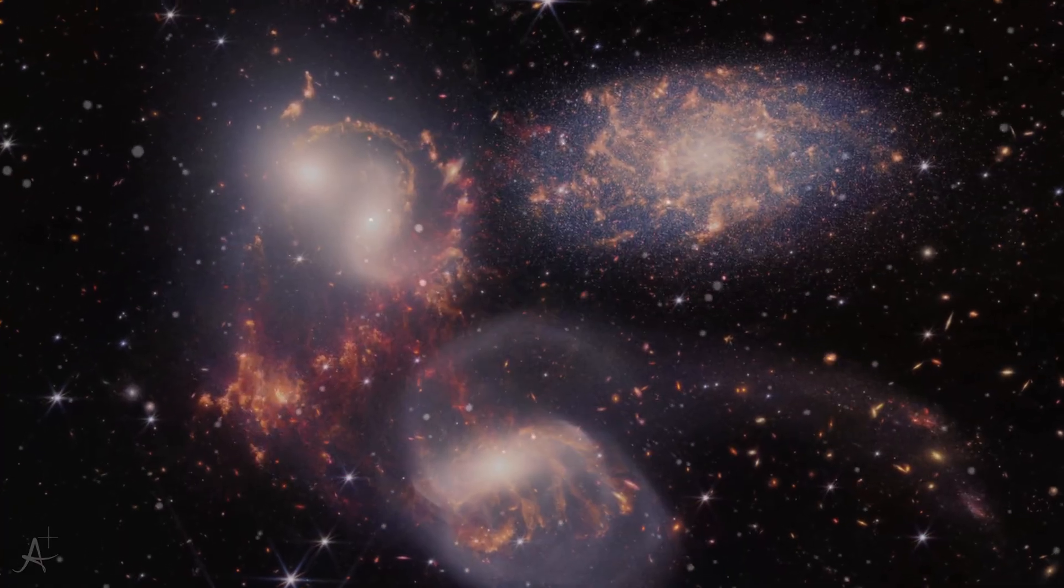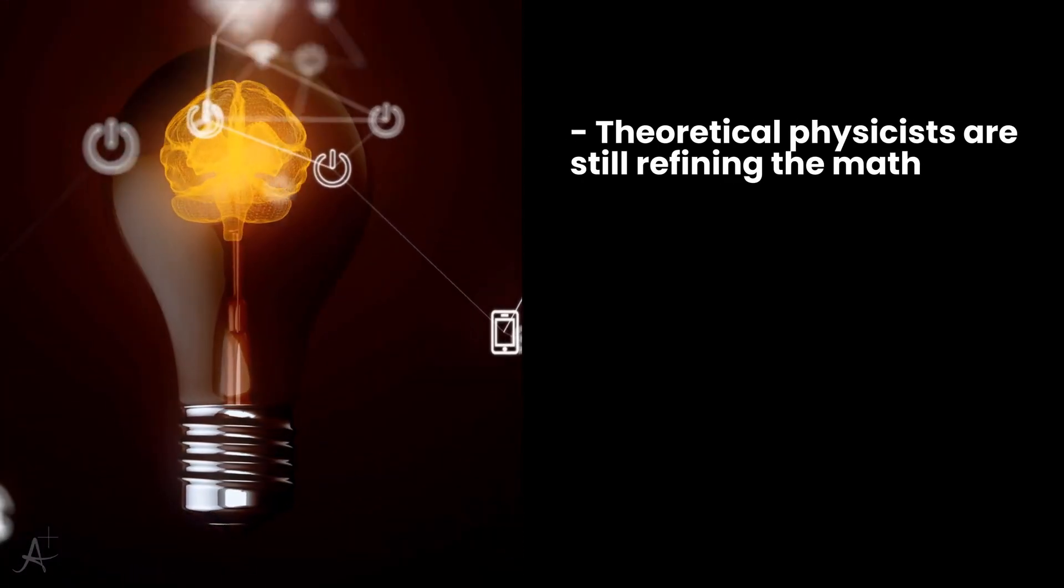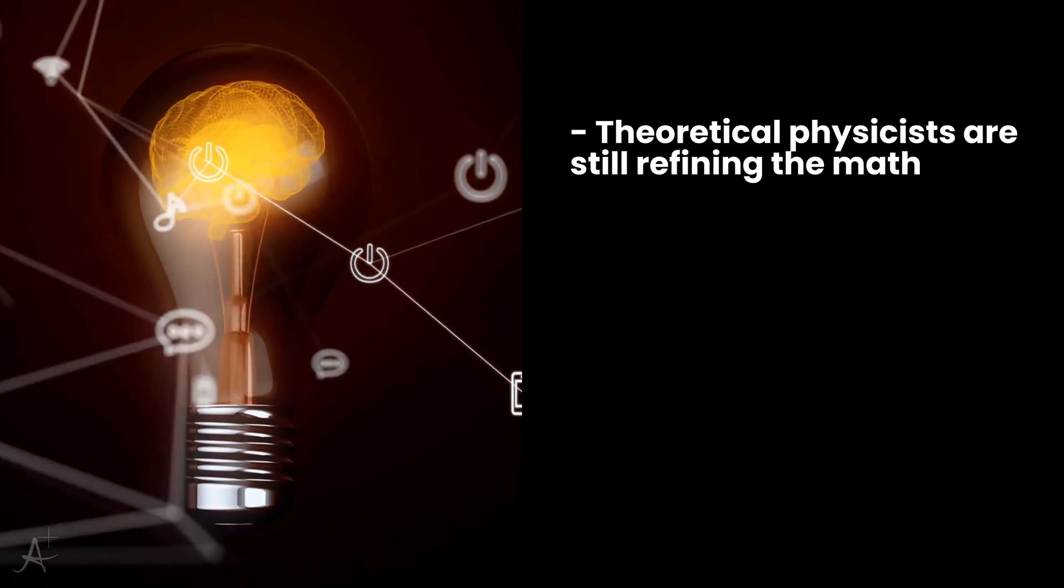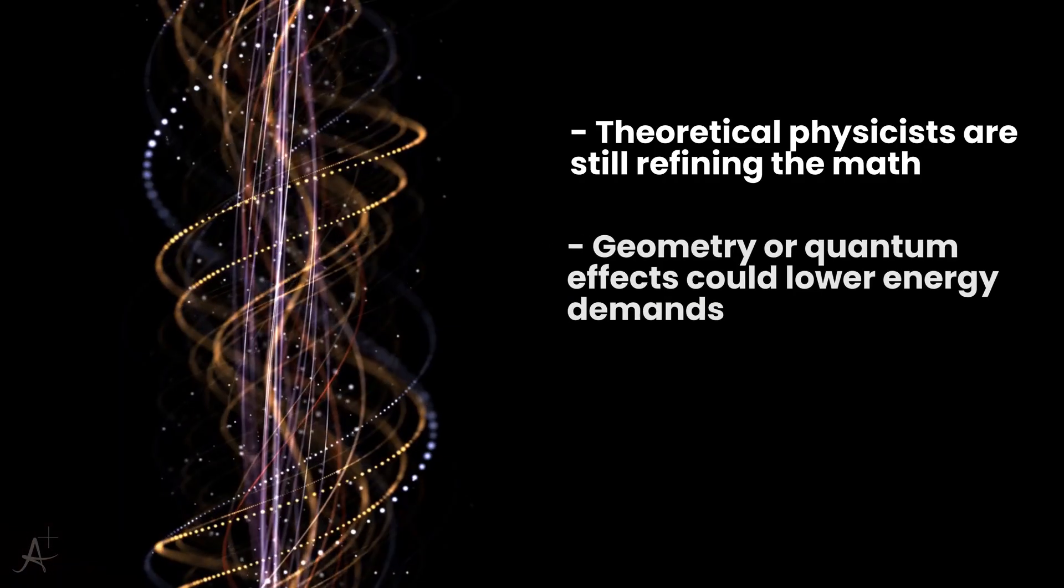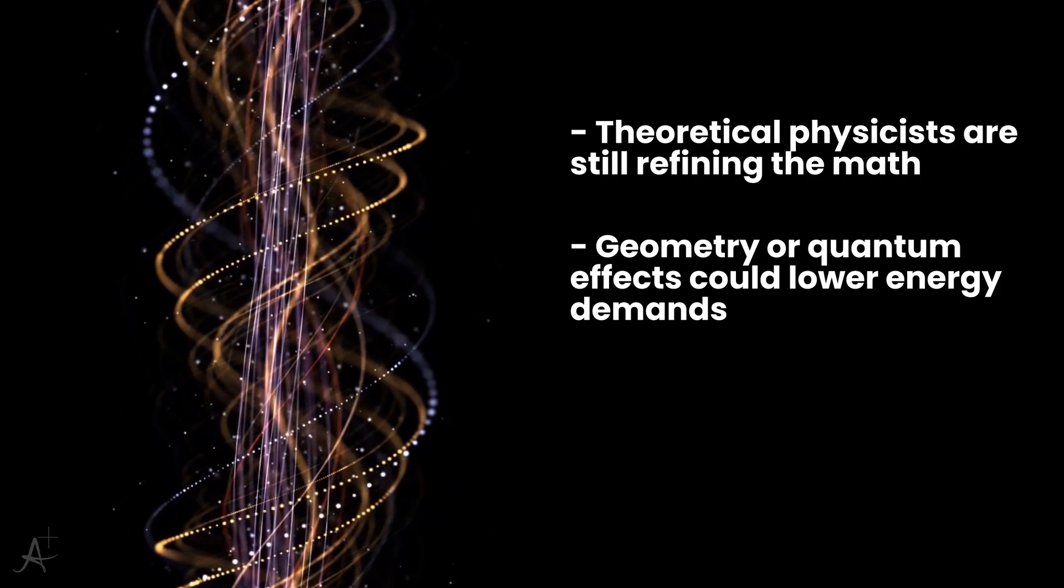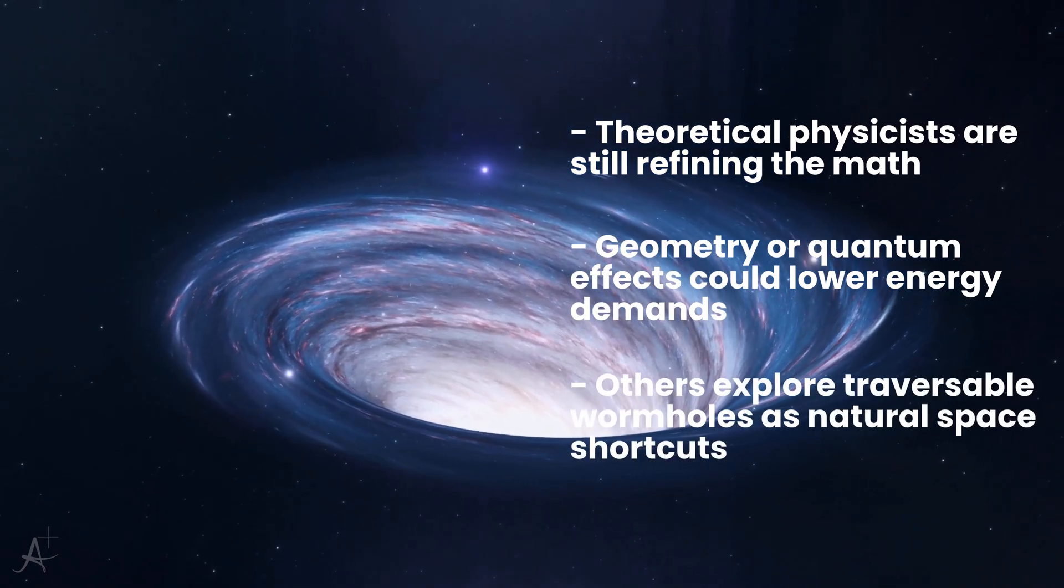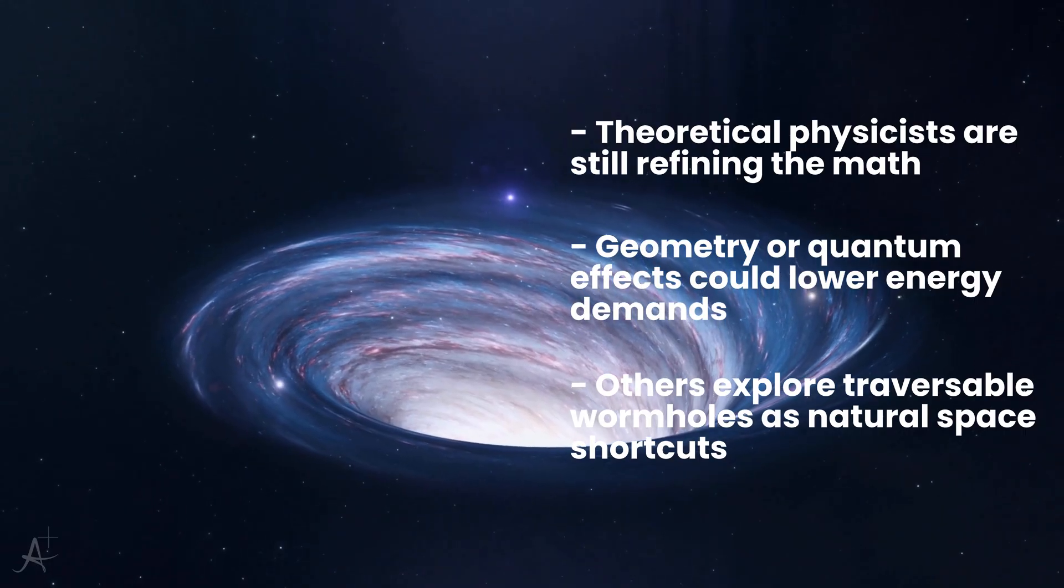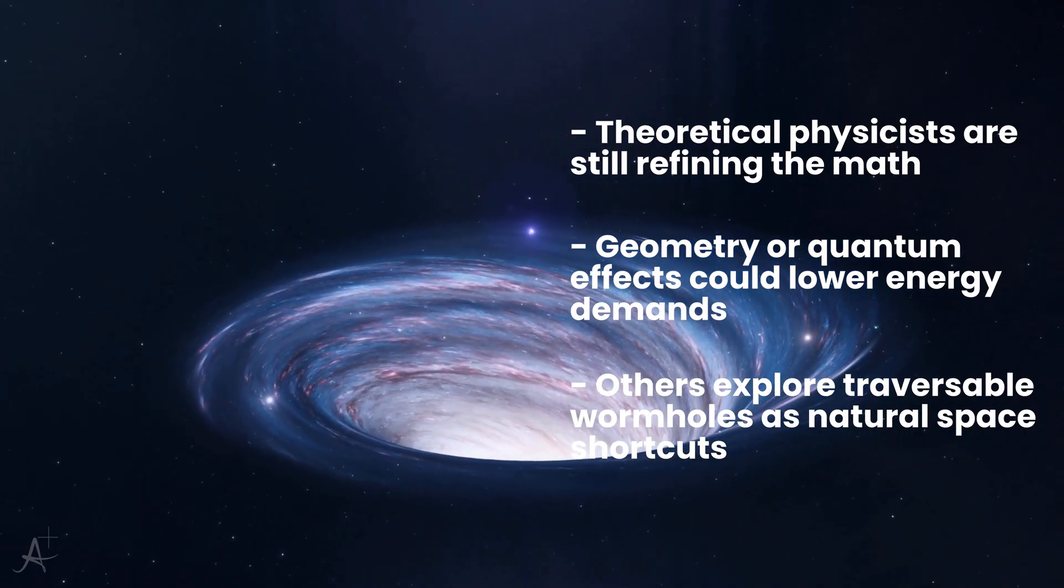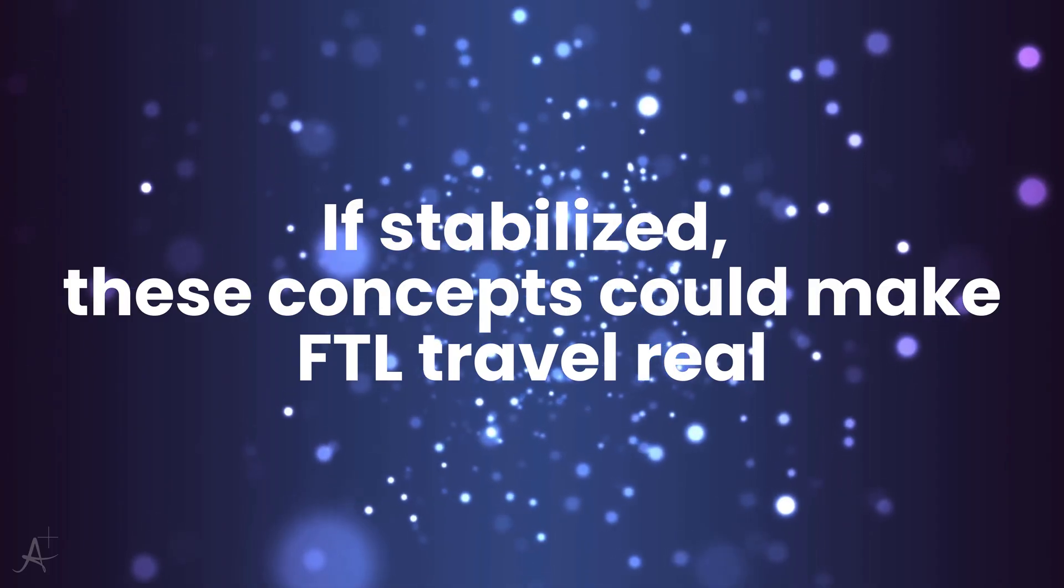That dream is far beyond what our current technology allows. But it's not beyond thought. Theoretical physicists continue to refine the math, searching for ways to make warp metrics require less energy. Some papers suggest the energy requirement might be drastically lower with clever geometry or quantum effects. Others propose alternatives, shortcuts like traversable wormholes, which are essentially natural warp tunnels connecting distant points of space. If either idea could ever be stabilized, faster-than-light travel would no longer belong to fiction.